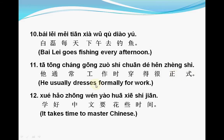The next sentence: 她通常工作时穿得很正式。 她 means 'she', 通常 means 'usually' or 'generally', 工作时 means 'during work', 穿 means 'dress', 很 means 'very', 正式 means 'formal' or 'formally'. So: She usually dresses very formally during work.